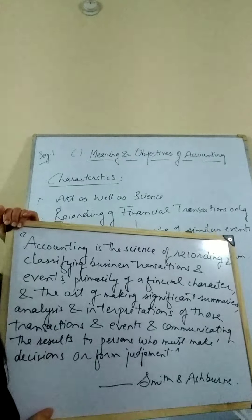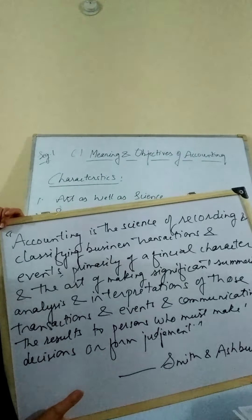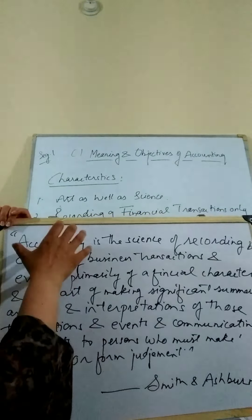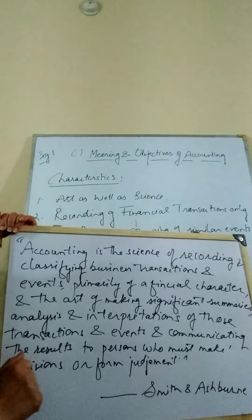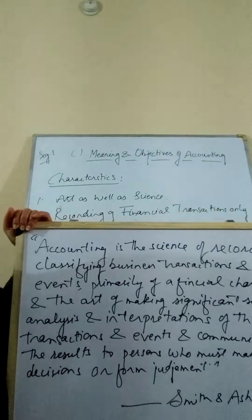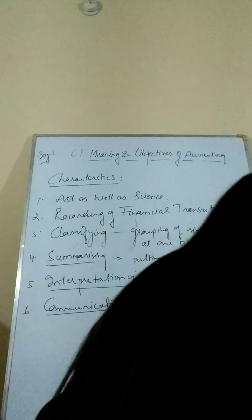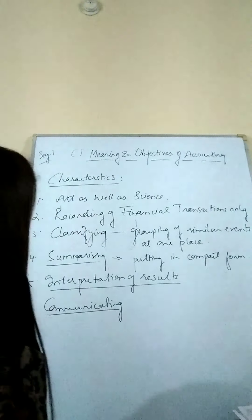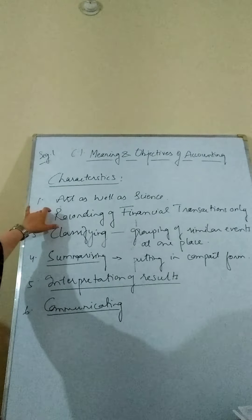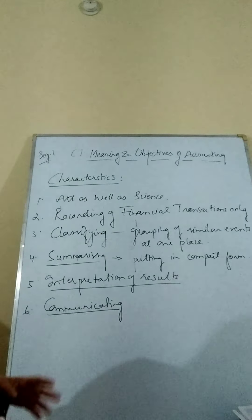This is a technical definition that we have taken as a base for accounting. We will explain it step by step so you can understand each element. The first feature based on this definition is that accounting is both an art and a science.